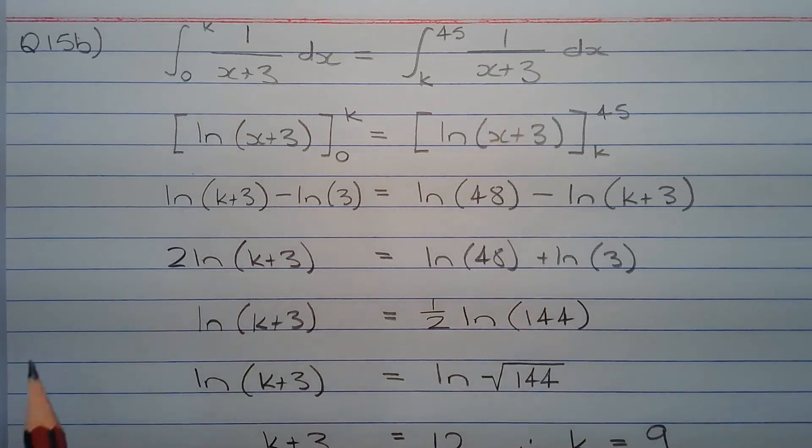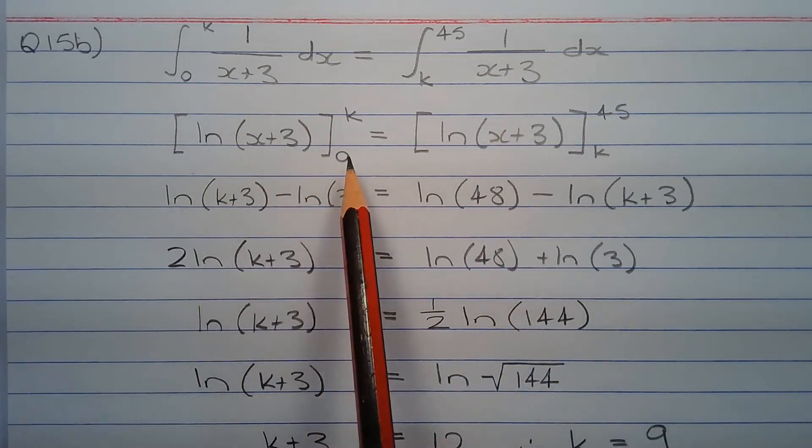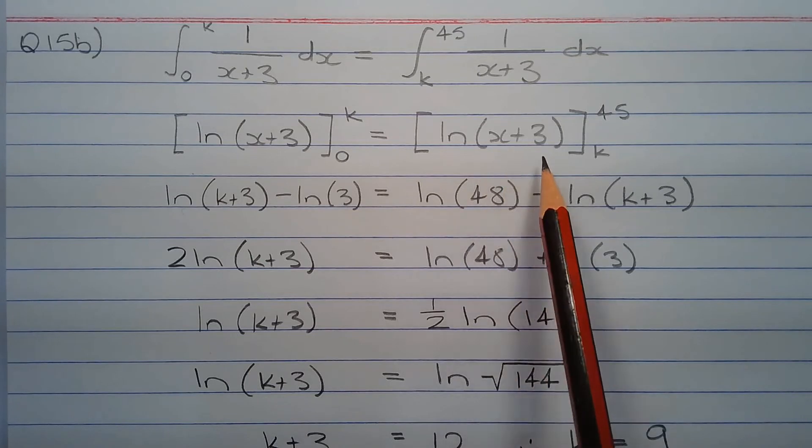Integrating both sides of this equation we have ln of x plus 3 from x equals 0 to x equals k is equal to ln of x plus 3 from x equals k to x equals 45.